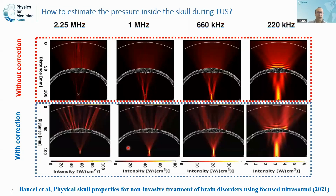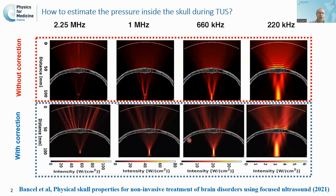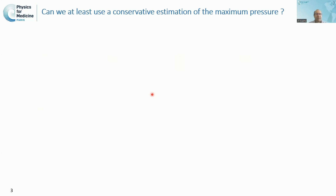We wanted to discuss how to estimate the pressure inside the skull. The pressure inside the skull during transcranial ultrasound depends on the shape of the transducer, the location of the focus, the frequency being used, but also whether you are performing transcranial focusing without correction or with correction. So estimating the pressure field inside the brain is not so simple. We wanted to know if we could use a conservative estimation of the maximum pressure inside the brain.